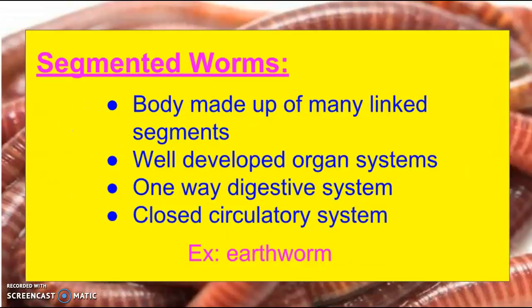The third group is segmented worms — these are your earthworms. They have bodies made up of many linked segments and well-developed organ systems. They have a one-way digestive system and also a closed circulatory system, just like we have. A closed circulatory system means blood moves within a connected network of blood vessels — it's not just out there willy-nilly in the body.